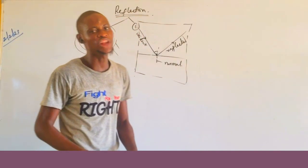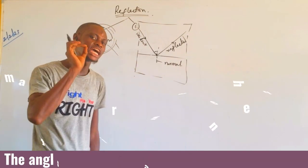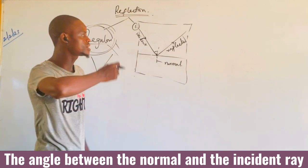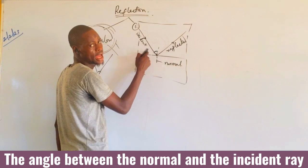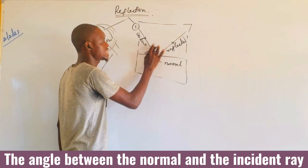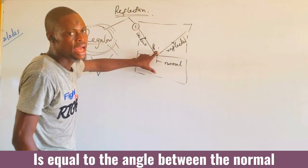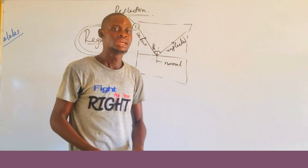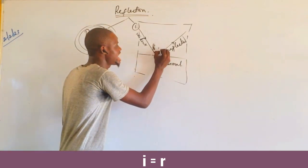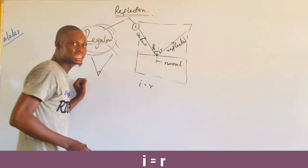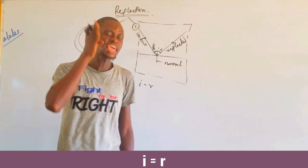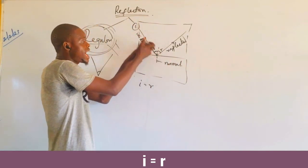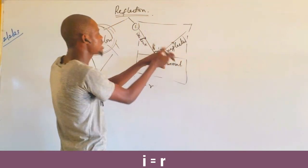The second law of reflection talks about the angle. An angle is formed when two lines meet each other. According to the second law, the angle between the normal and the incident ray — known as the angle of incidence (I) — is equal to the angle between the normal and the reflected ray — which is the angle of reflection (R). So the angle of incidence equals the angle of reflection: I = R. No matter how the reflection takes place, if the surface remains smooth, the angle of incidence between the normal and the incident ray must equal the angle of reflection between the reflected ray and the normal.